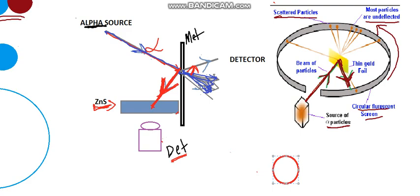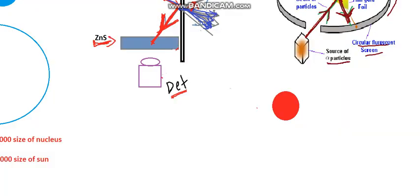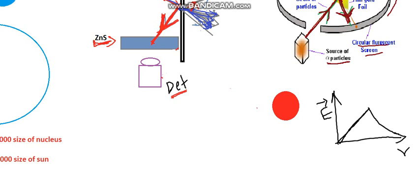If you consider an atom like a sphere with a spherical charge distribution, you can look at the electric field variation with distance. On the x-axis you have distance, on the y-axis you have electric field. The maximum electric field occurs when r equals capital R, which is the radius of the spherical charge distribution — that is the maximum electric field at the surface.